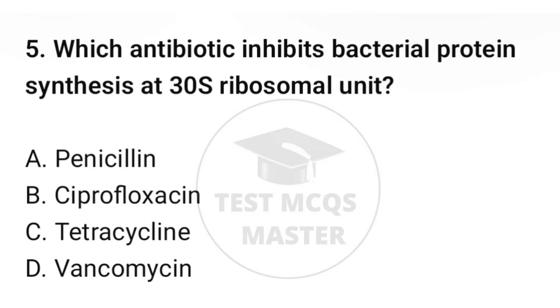Question number five: which antibiotic inhibits bacterial protein synthesis at the 30S ribosomal unit? The correct option is C: Tetracycline.